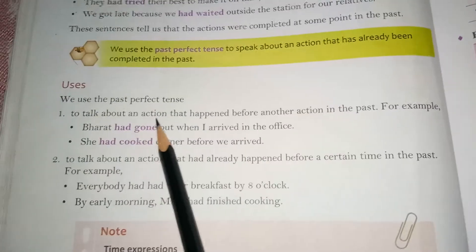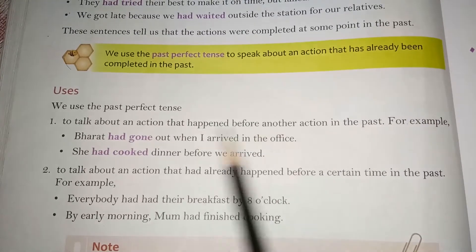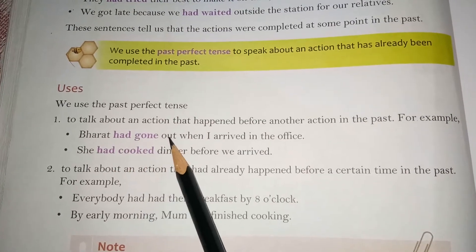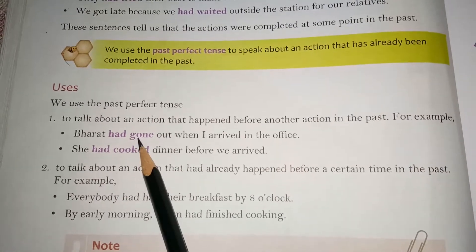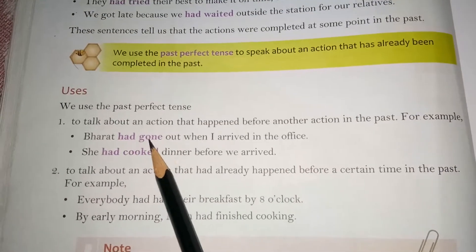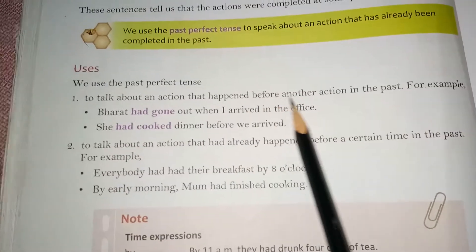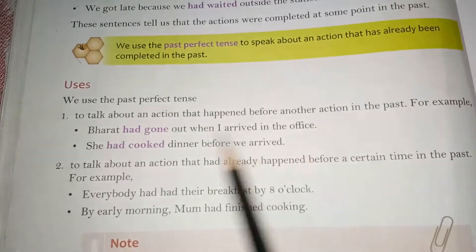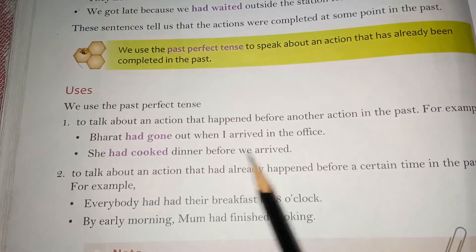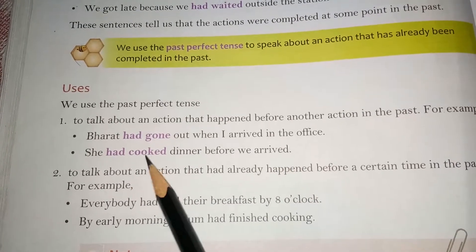We use the past perfect tense to talk about an action that happened before another action in the past. For example, Bharat had gone out when I arrived in the office — one action is already done. She had cooked dinner before we arrived, meaning before we came, she had already cooked the meal.